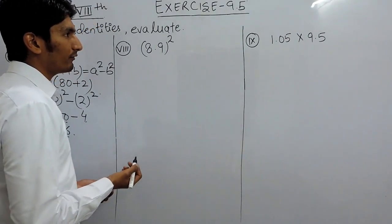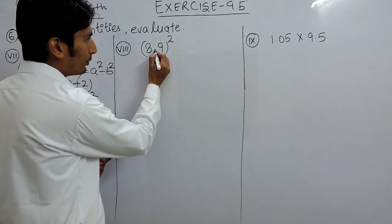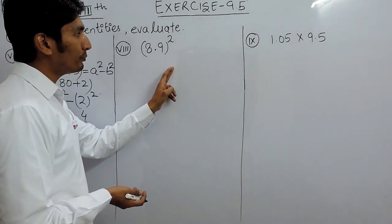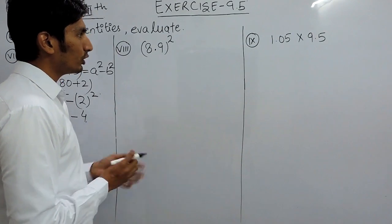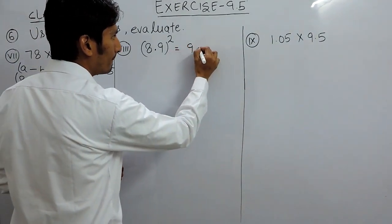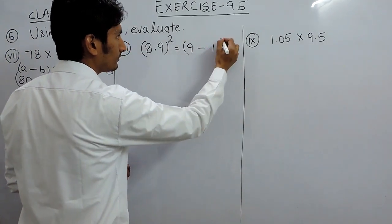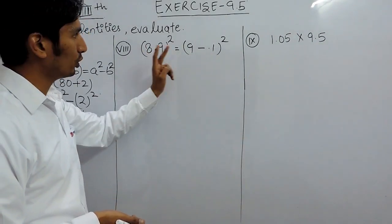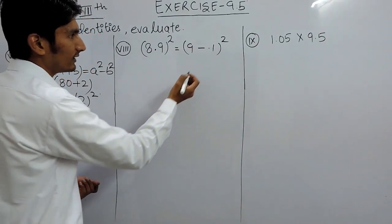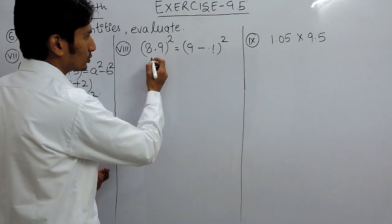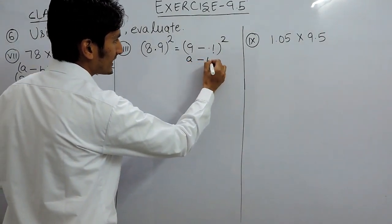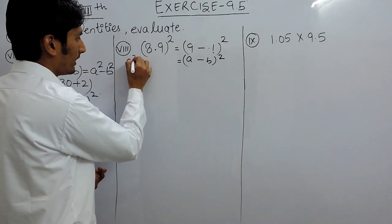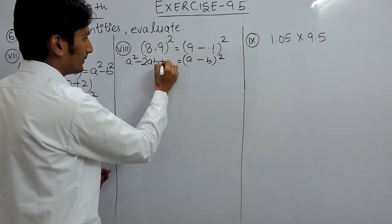Now this is a square, so we have to use the formula for (a plus b) whole square. 8.9 can be written as 8 plus 0.9, but squaring 0.9 will be difficult. It is better to write this as 9 minus 0.1, because subtracting 0.1 from 9 gives us 8.9. This is the best way because squaring 0.1 will be easy. So if I consider 9 as a and 0.1 as b, this becomes (a minus b) whole square, which equals a square minus 2ab plus b square.